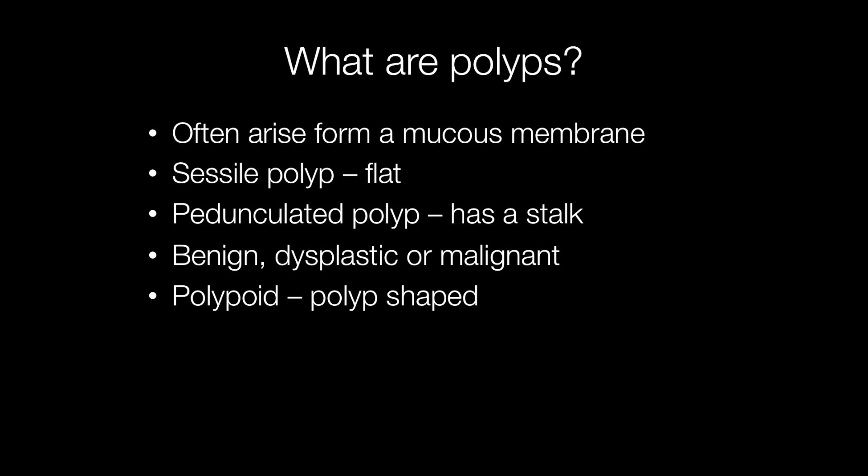Polyps often arise from a mucous membrane. A very good example would be adenomatous polyps arising from the large bowel mucosa. If polyps are flat, these are called sessile polyps; if they are pedunculated, that means they have a stalk. Polyps may be benign, dysplastic, or malignant, and if something is polyp-shaped it may be referred to as polypoid.